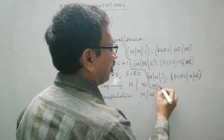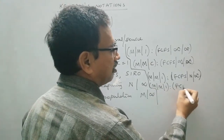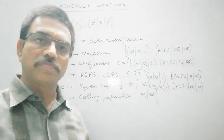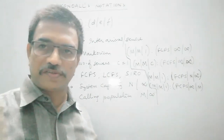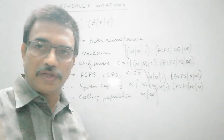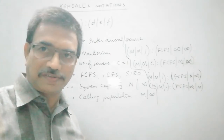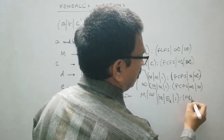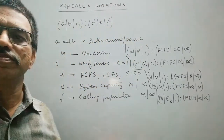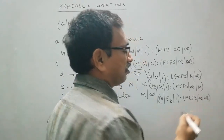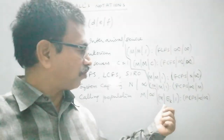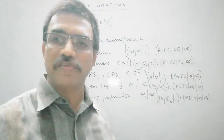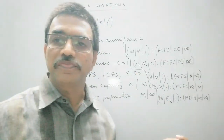Similarly, if the calling population is finite with single server, first come first serve service discipline, with infinite service capacity, and suppose the number of customers is limited to M, then we can designate it accordingly. In some other case, if the service time follows Erlang distribution with K stages, we can designate it for infinite calling population, infinite service capacity, first come first serve queue discipline, inter-arrival times following exponential distribution or Poisson process, and service times following Erlang distribution. So this is how we can designate different types of queuing models.